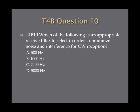Question 10. Which of the following is an appropriate receive filter to select in order to minimize noise and interference for CW reception? A. 500 Hz. B. 1000 Hz. C. 2400 Hz. D. 5000 Hz.